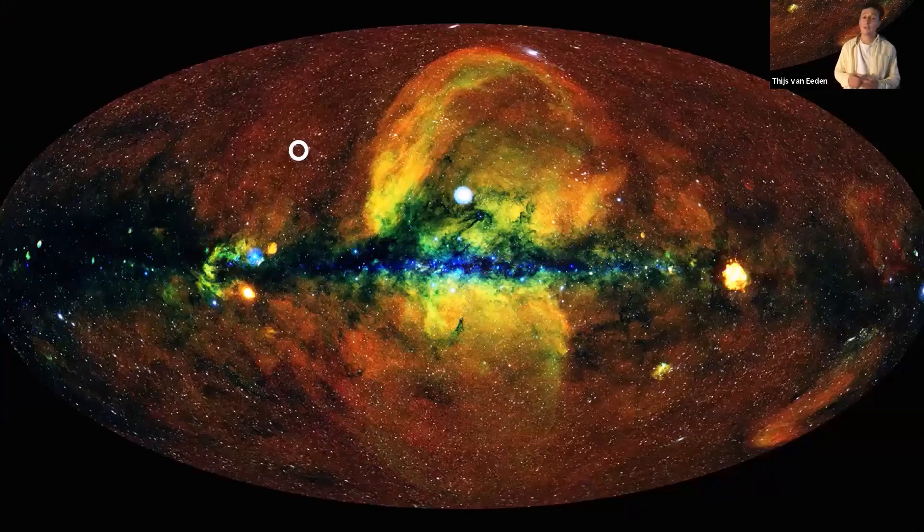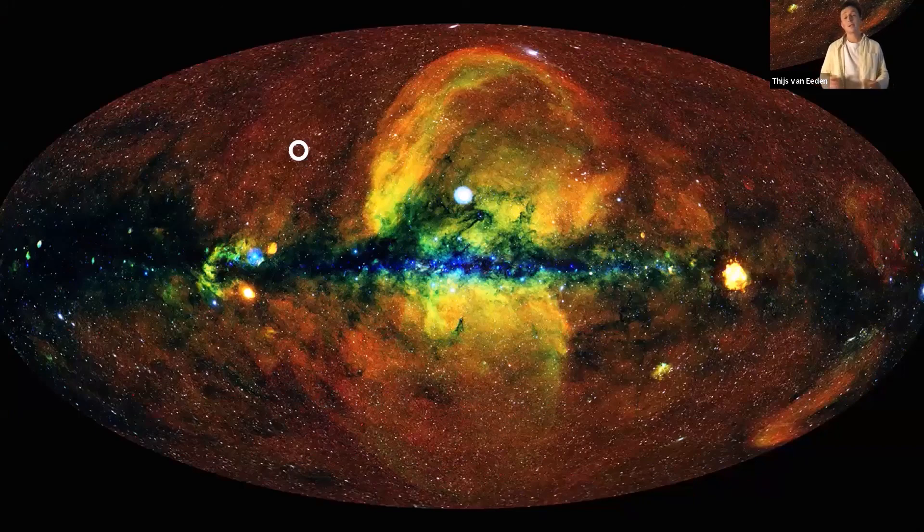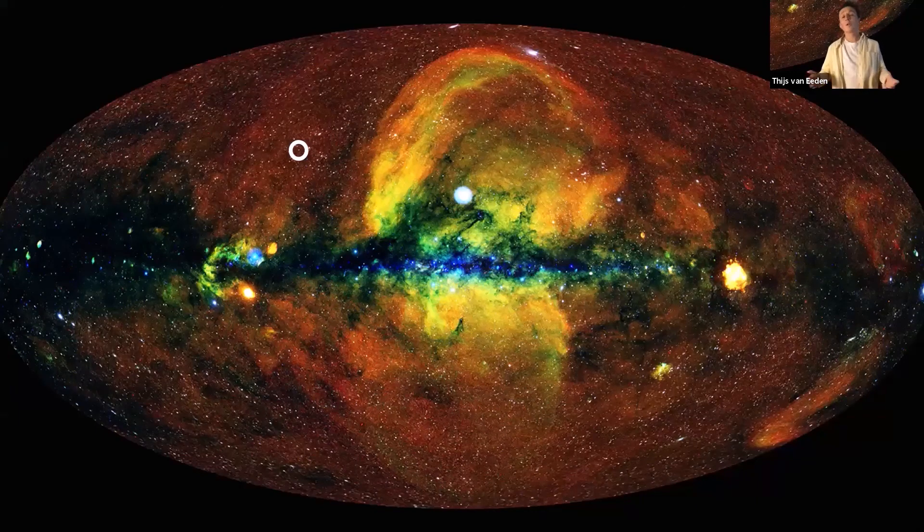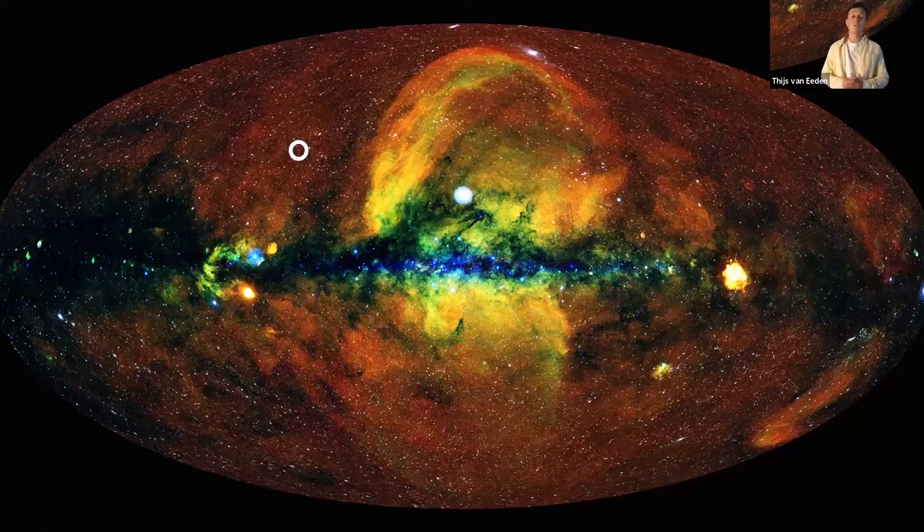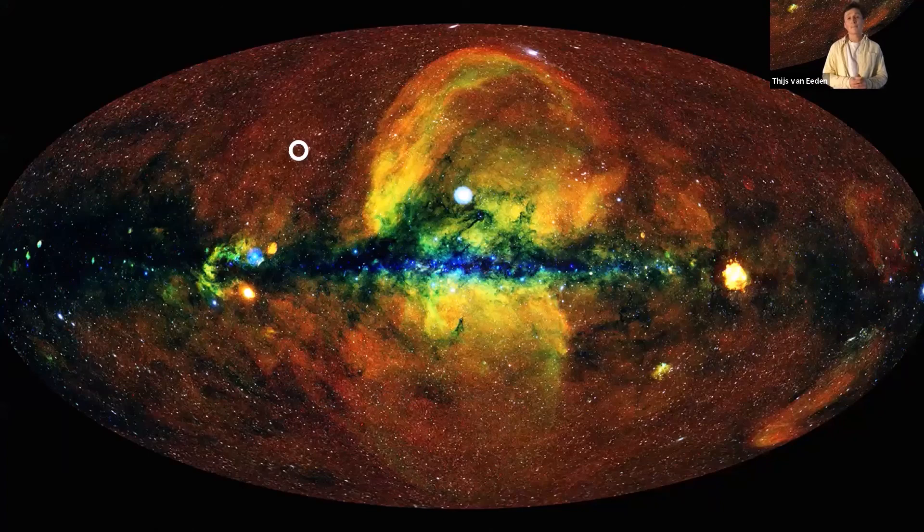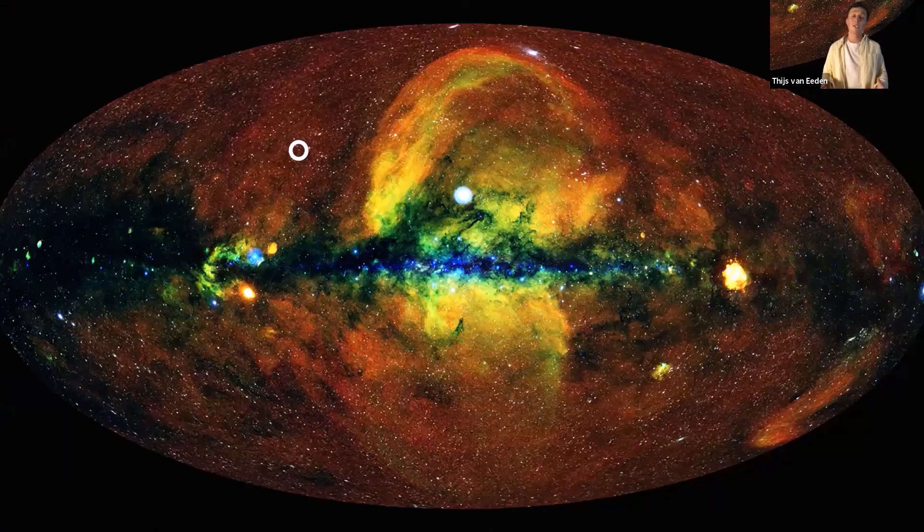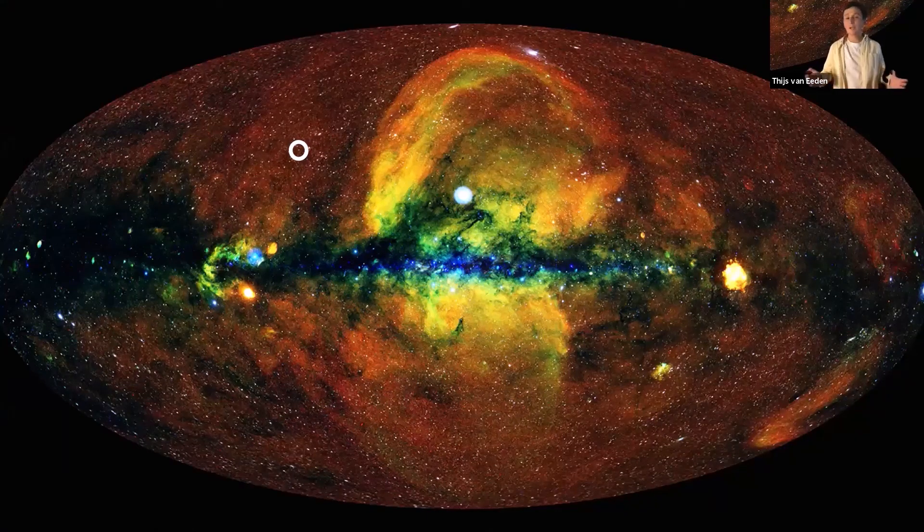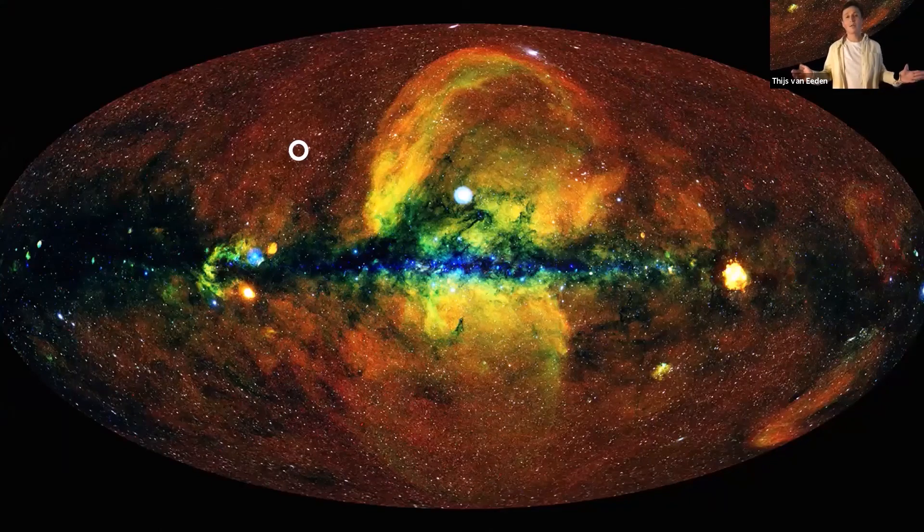And then we can pinpoint an origin of a particle on the sky map like this. And when we can do it like this, we are in an excellent position to work together with scientists and astronomers around the world to figure out what kind of objects are there that are creating these particles. And hopefully, this will help us to solve the mystery surrounding these extremely energetic particles flying around in our universe.